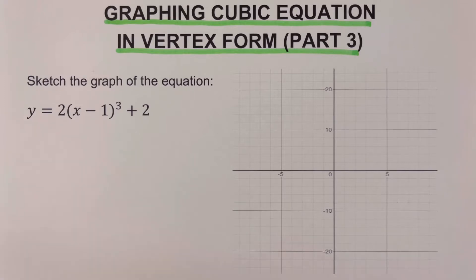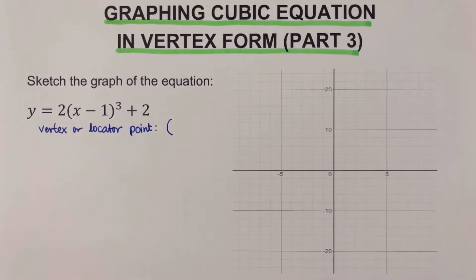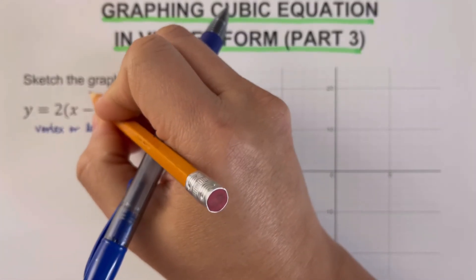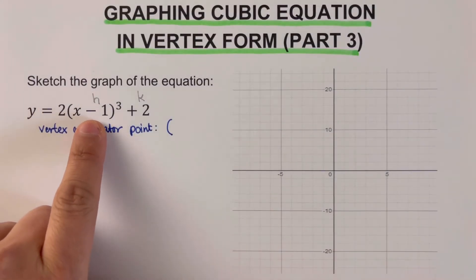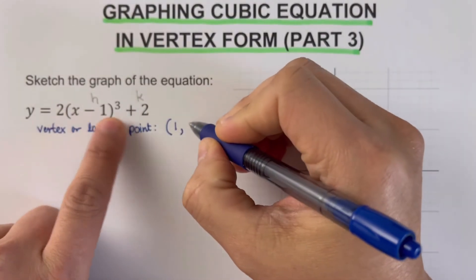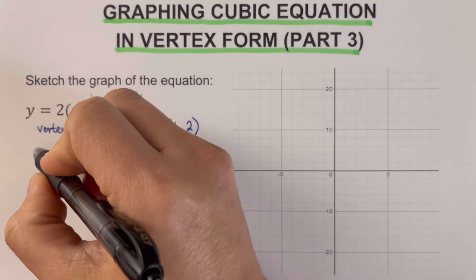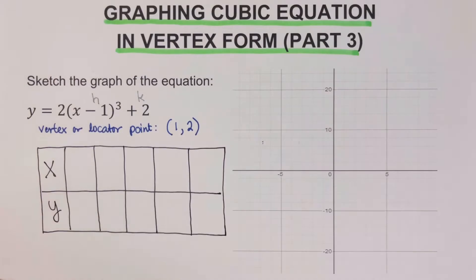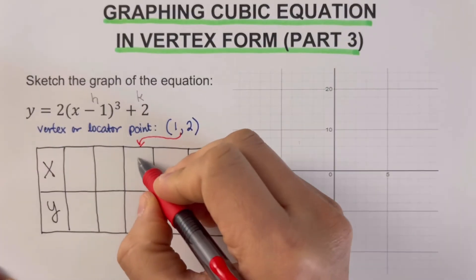Going back to the problem, our first step is to determine the locator point or the vertex. The vertex or locator point is the coordinate (h, k). Here, h is negative one — the trick is to switch the sign, making it positive one — and k is positive two. So our vertex is (1, 2). The second step is to create and complete the table of values. We place the locator point in the middle at x equals 1, then add x values of 2, 3, 0, and negative one.